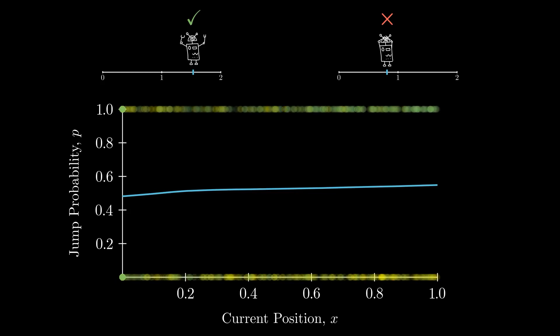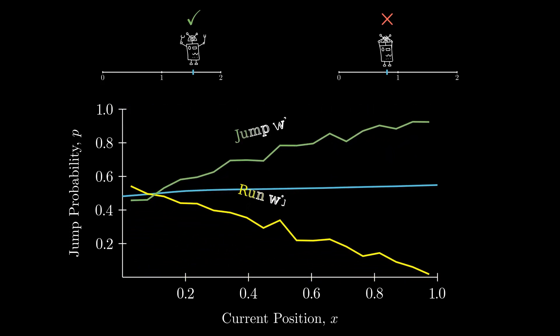For us to visualize the data, we can bin it and plot it as how frequently a robot wins when they take a specific action from a given point. When we view the data in this manner, we see that when playing against this given strategy, jumping is favorable further down the track.